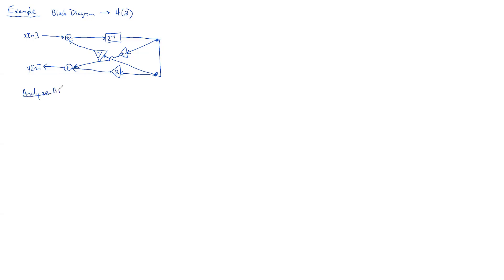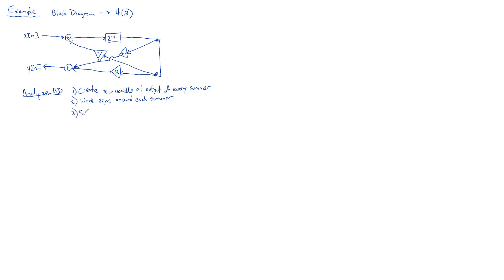You're going to analyze block diagrams by: one, creating a new variable at the output of every summer; two, writing your equations around each summer — since you have a variable on the output, that output equals the sum of the inputs; and then you'll simplify by eliminating your intermediate equations. It's just algebra.